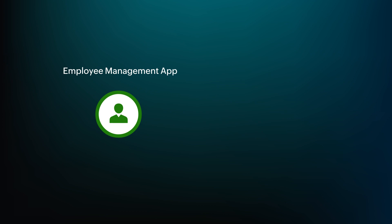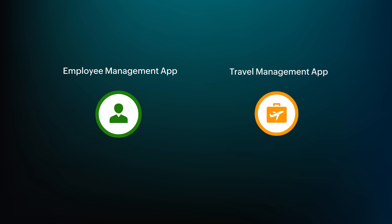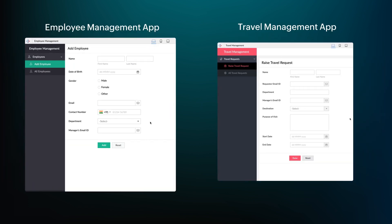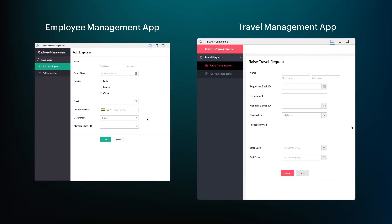To demonstrate this requirement, let's consider the example of two apps: the Employee Management app and the Travel Management app. This is the Add Employee form in the Employee Management app where the employee details will be stored. On the other hand, the New Travel Request form in the Travel Management app allows employees to raise requests for their business trips.